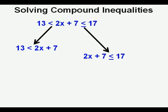Let's look at the AND type first with the variables in the middle. We can solve this two different ways. We can separate the three elements into two separate inequalities, then graph them both and see what happens on a number line.